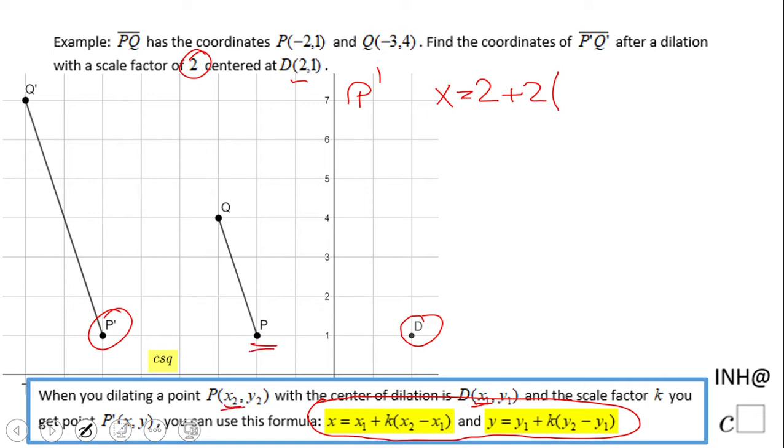For P prime, x₁ is the x-coordinate of the center of dilation, which is 2, plus K—K is the scale factor, 2—times (x₂ - x₁). x₂ is the x-coordinate of the original point P, which is -2, and x₁ is the x-coordinate of point D, which is 2.